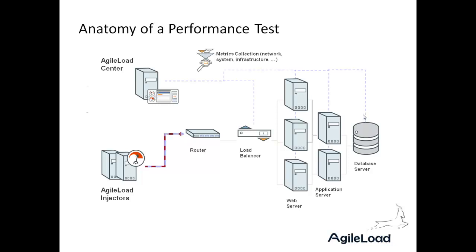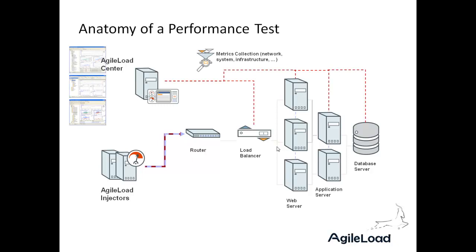We generate load on the application — hitting the web server, which makes service requests to the application server, which in turn makes database requests, and then sends messages back up the stack — giving us an end-to-end performance test. While this is running, Agile Load can also monitor the performance of each infrastructure node: things like CPU, database calls, memory utilisation, network utilisation, and so on, pulling it all together into Agile Load Center.